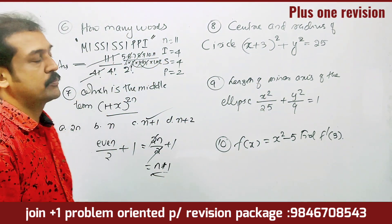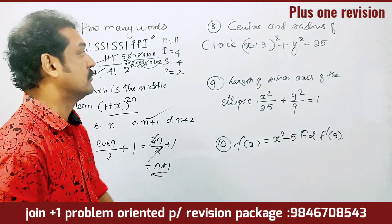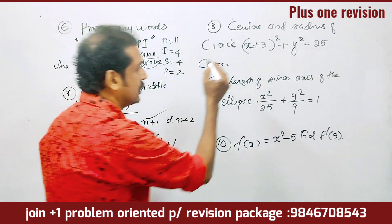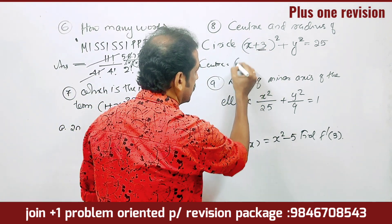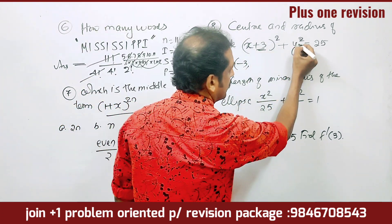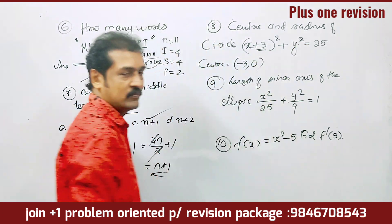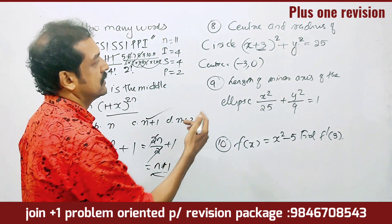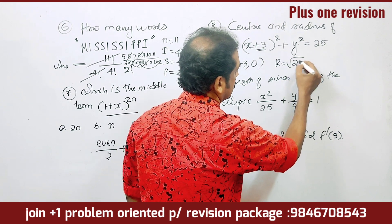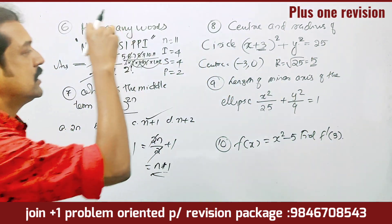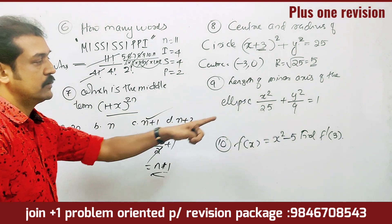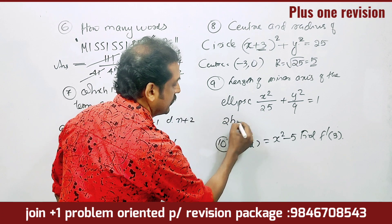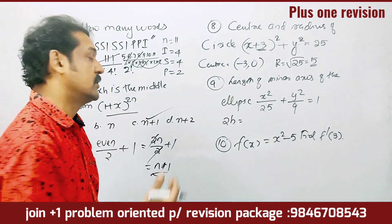Next: (x + 3)² + y² = 25. The center of this circle is (−3, 0) and the radius is 5. Next, for the ellipse x²/25 + y²/9 = 1, we identify the minor axis. The minor axis corresponds to the smaller denominator, and the major and minor axes are identified from this equation.